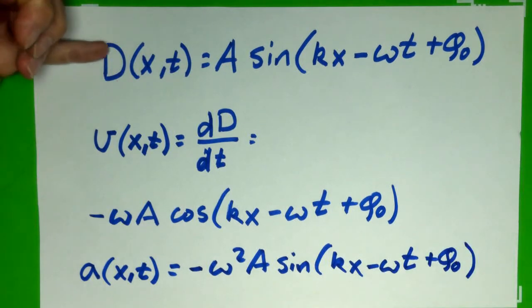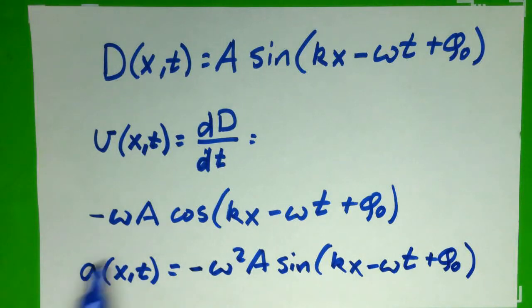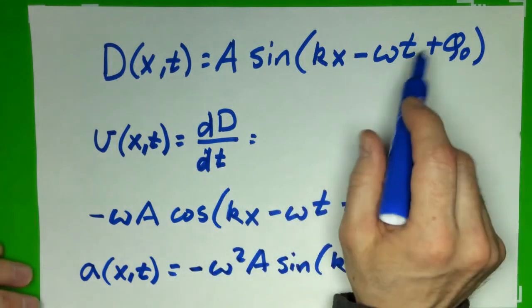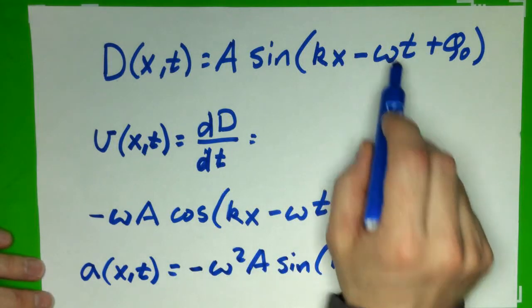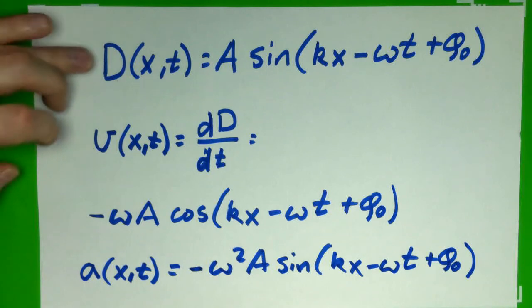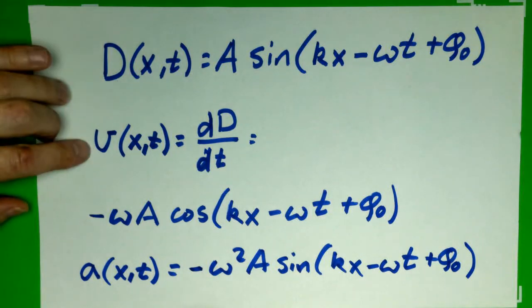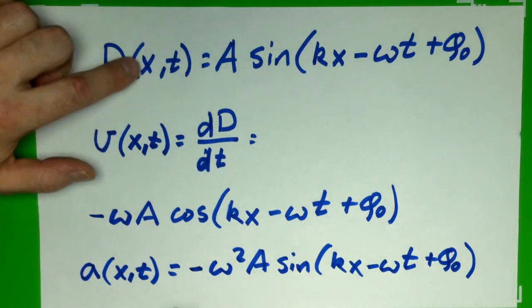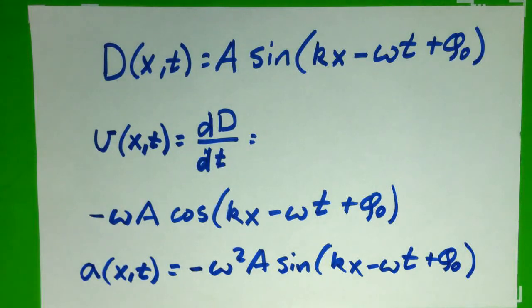So we have our kinematic values for the particles that make up the wave. Whereas the wave itself, the wave speed, is represented within this angular frequency, and the other parameters like λ, the wavelength, that describe the wave generally. But these describe the position, velocity, and acceleration of all the particles of the wave.